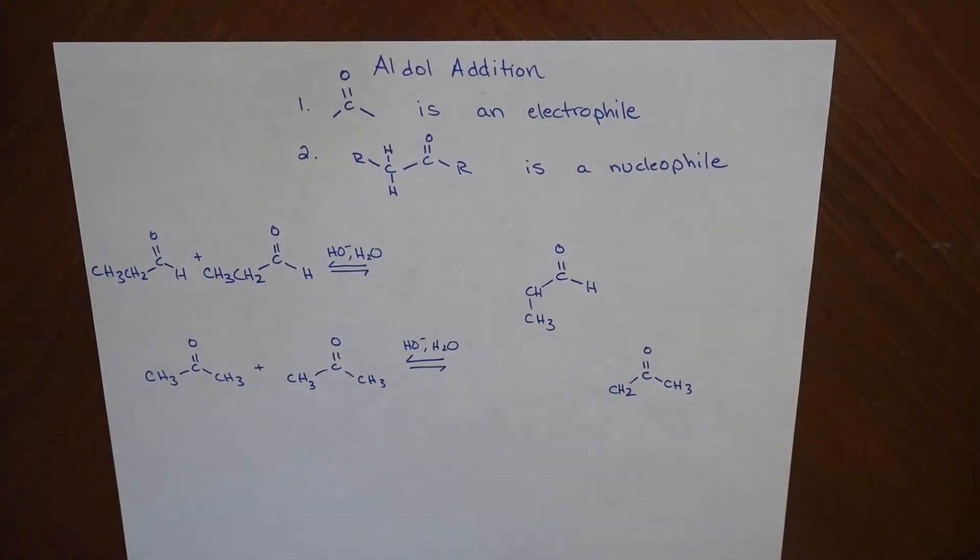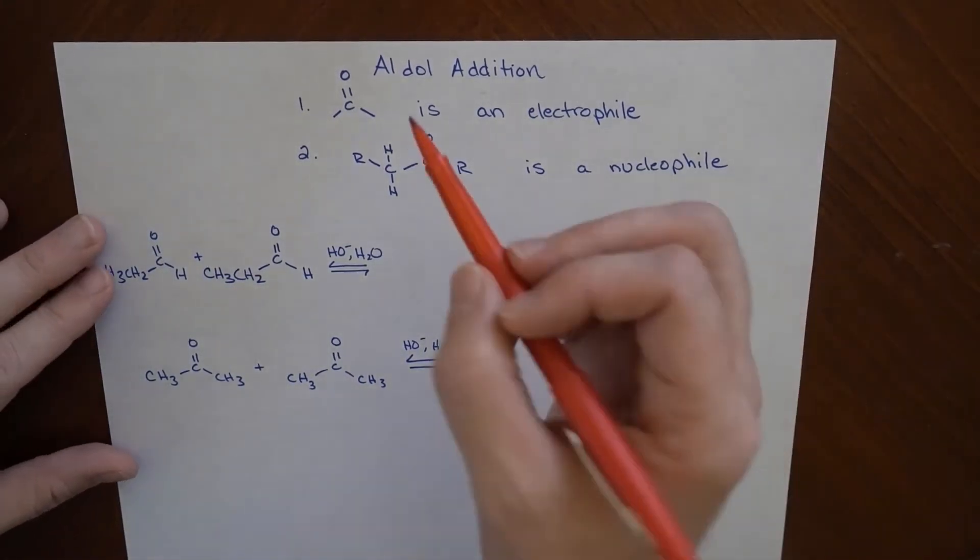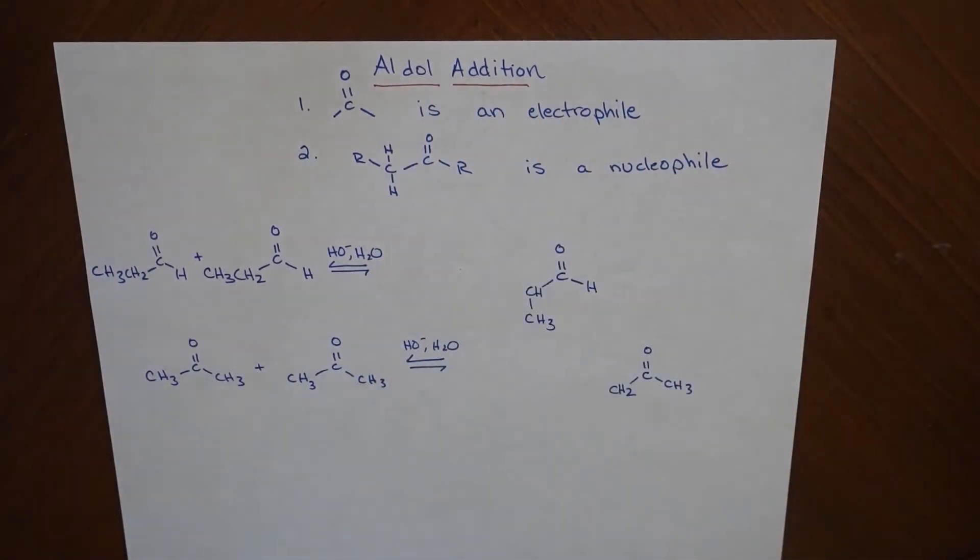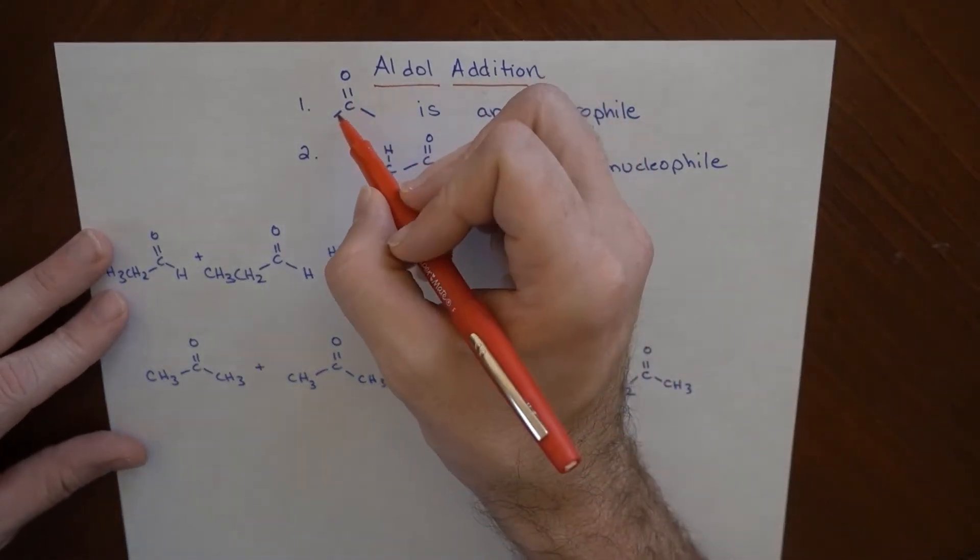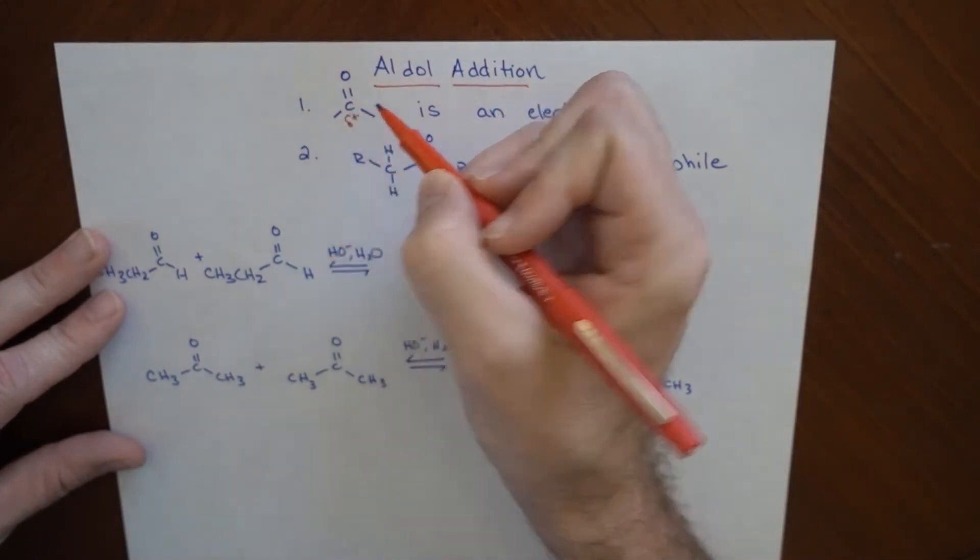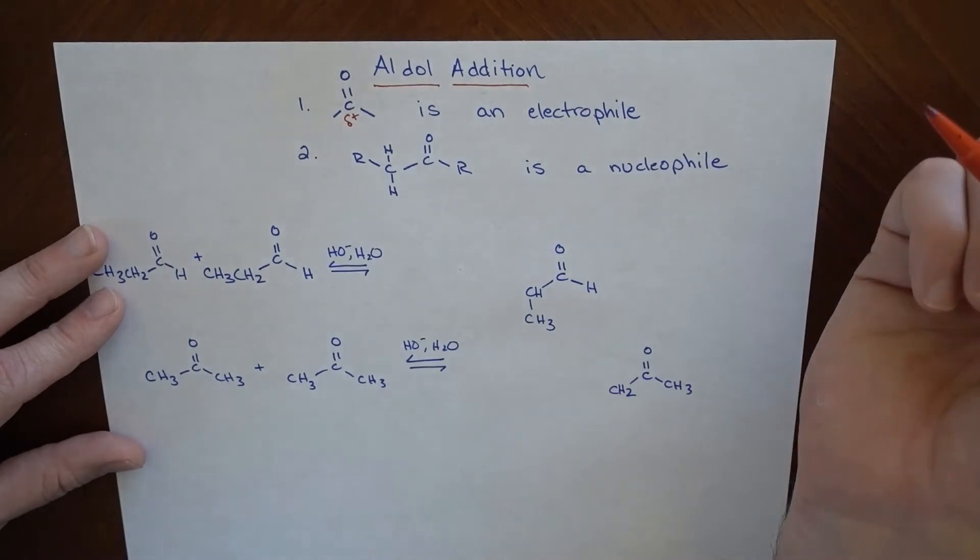So now we're getting to a rather important concept. It's known as the aldol addition, like an aldehyde hydroxide addition here. So two things that are important here. One is that in any one of these compounds that contains a carbonyl, this has a slight positive charge that makes it an electrophile.